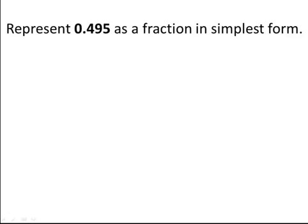Represent 0.495 as a fraction in simplest form. Remember we can also say this decimal number as 495 thousandths, which tells us as a fraction it would be 495 out of 1000.